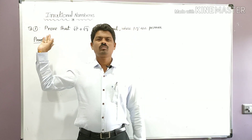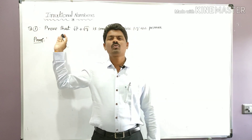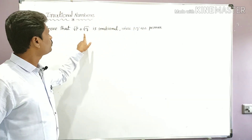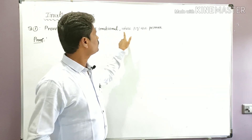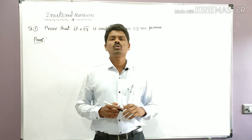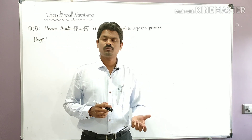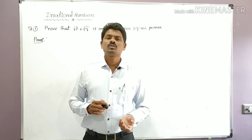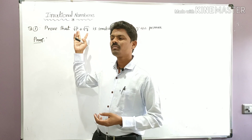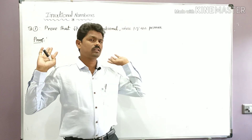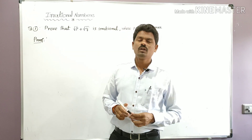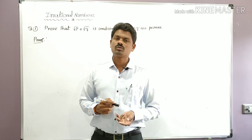Hello students, welcome to Learn More Math. Today we are going to learn about proof of irrational numbers. The question is: prove that √p + √q is irrational, where p and q are primes. We have already proved five models of irrational numbers using the direct method. This is one more model, and here he has taken variables, saying that p and q are primes.